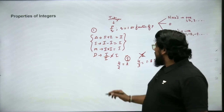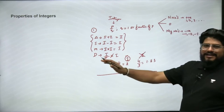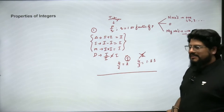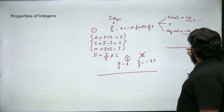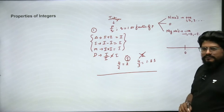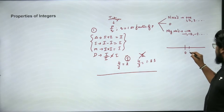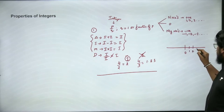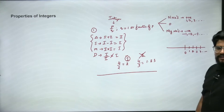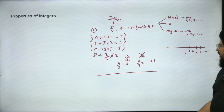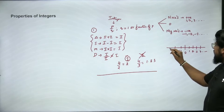Apart from arithmetic operations, we need to understand a few more aspects before we go deeper into integers. On the number line: zero is here, then 1, 2, 3, 4 and so on to the right, and −1, −2, −3 and so on to the left.